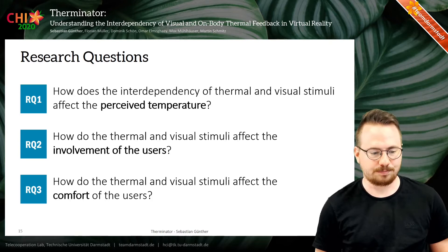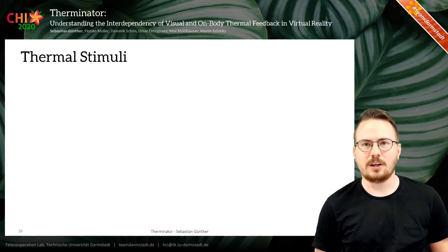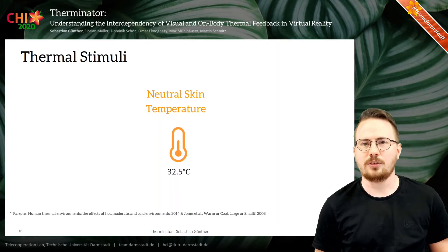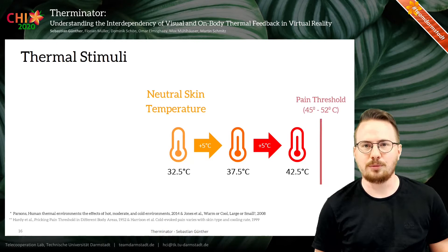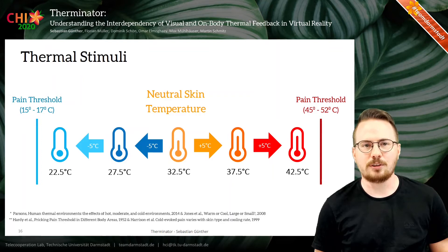To answer those questions, we first had to define how the thermal stimuli would look like. We used the neutral skin temperature at 32.5 degrees Celsius as a starting point, then increased the temperature in five-degree steps until reaching 42.5 degrees Celsius, staying below the upper pain threshold. We also decreased the temperature in five-degree steps until reaching 22.5 degrees Celsius, just above the lower pain threshold, resulting in five total thermal stimuli.